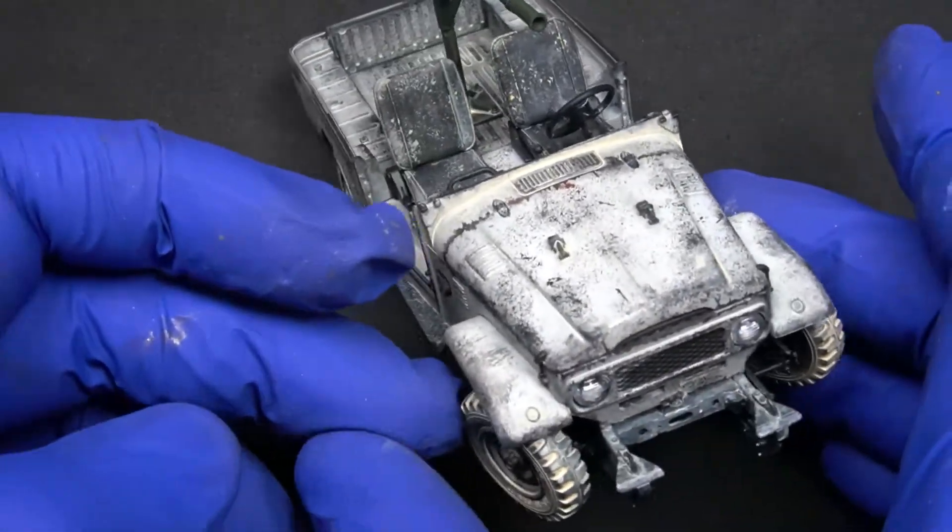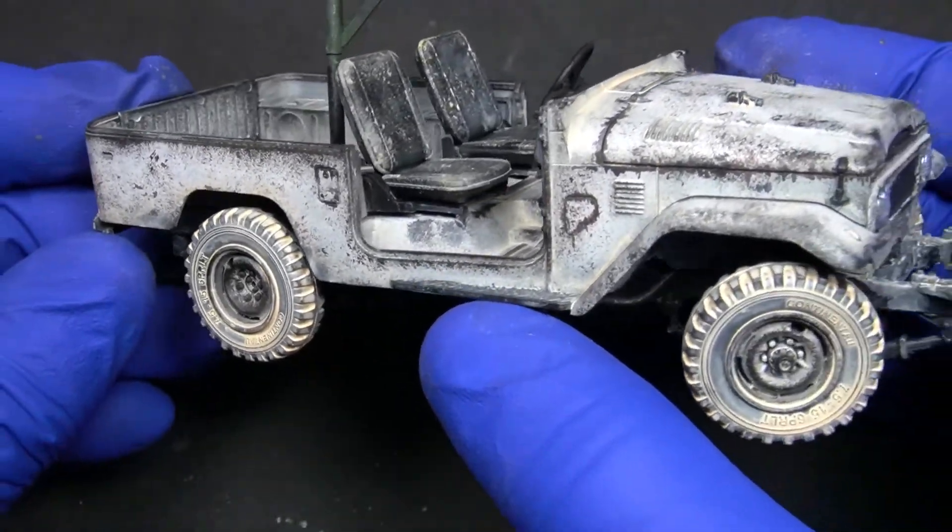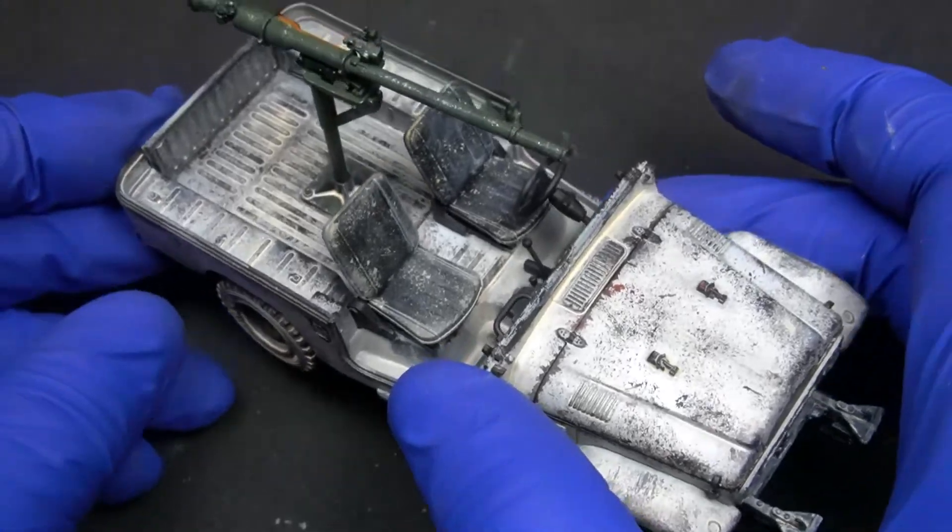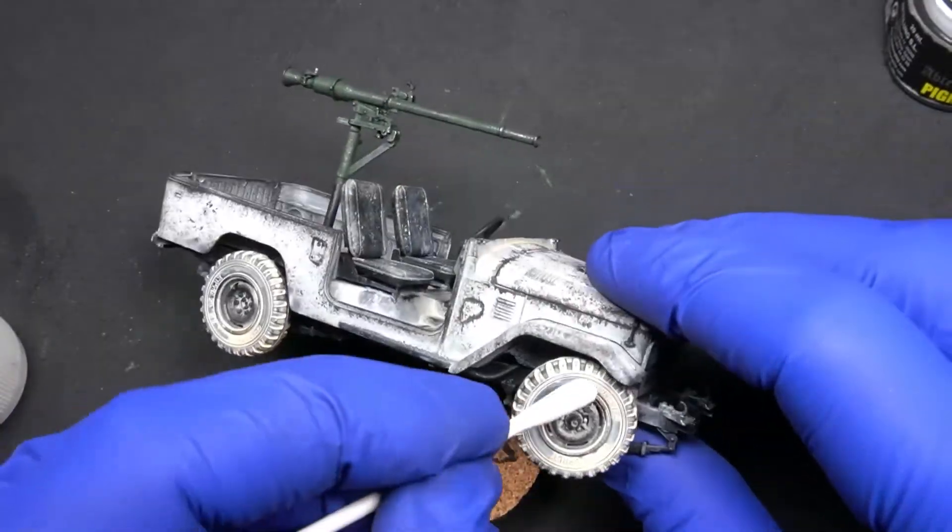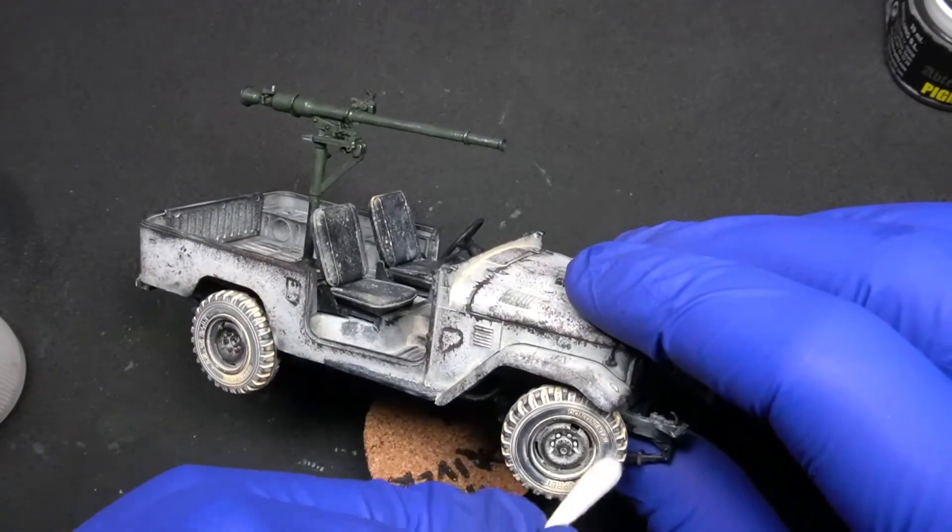As you can see, after the product has dried, the finish is quite convincing. So now we only need to touch up some areas to, for example, remove the excess of the dust on the side of the wheel. For this we use a cotton swab.